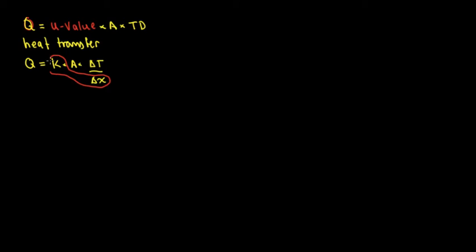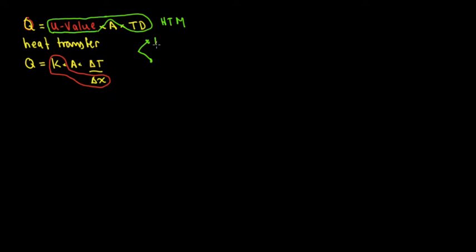So we have that this is the U value. In this case, we're going to utilize the heat transfer multiplier, which is the U value times TD. That's the heat transfer multiplier, and there are two types. For heat load calculation, there are always two types: the heating heat transfer multiplier and the cooling heat transfer multiplier.